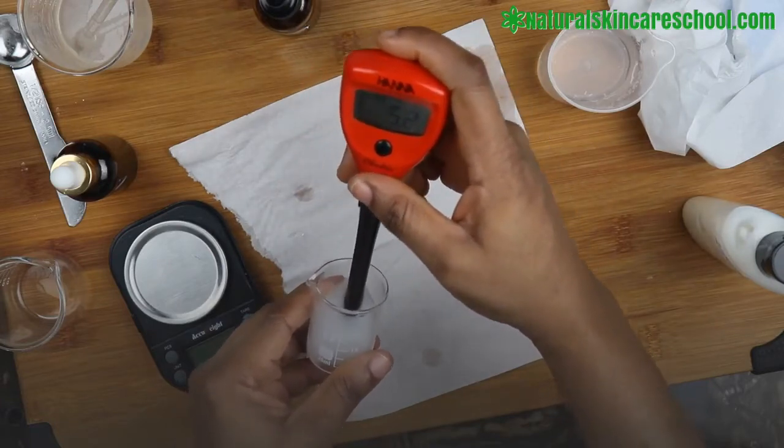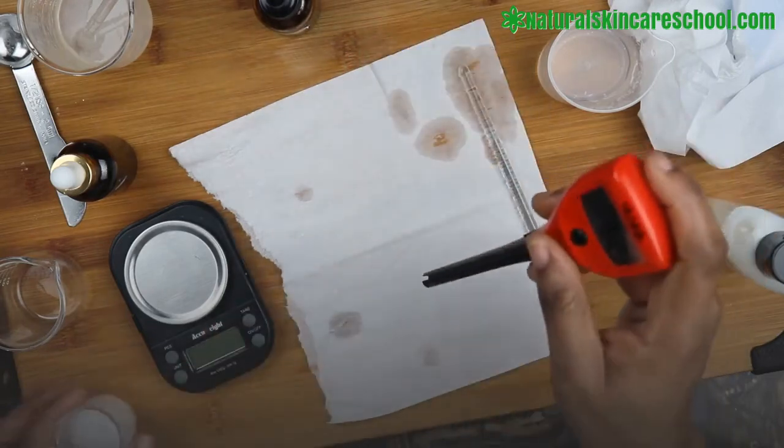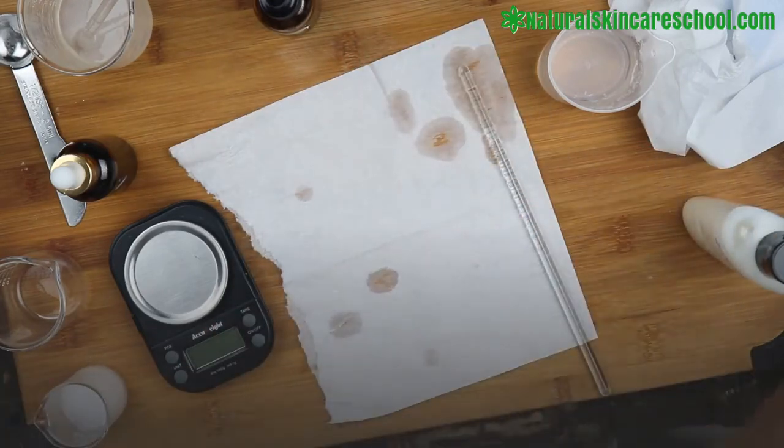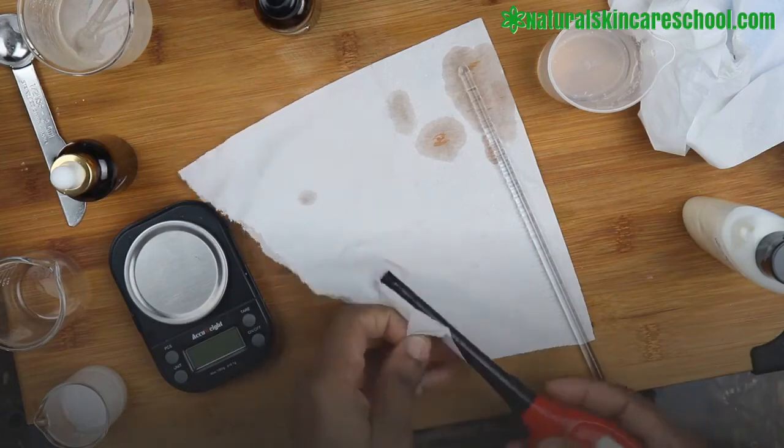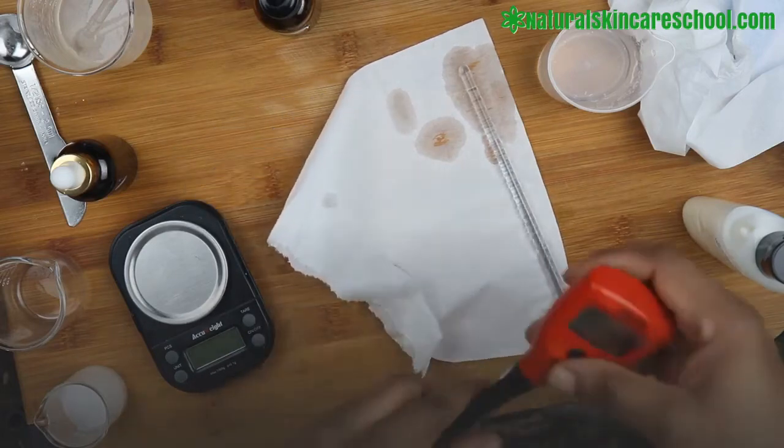So right now the pH is 5.2. The pH is very perfect. This is a very good lotion. The pH of the skin is 4.5 to 5.5, so 5.2 is very okay. And that's how you check the pH of your lotion.